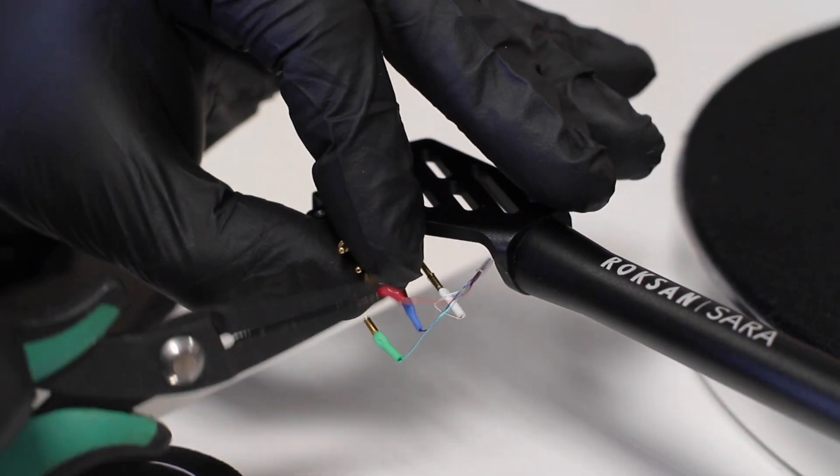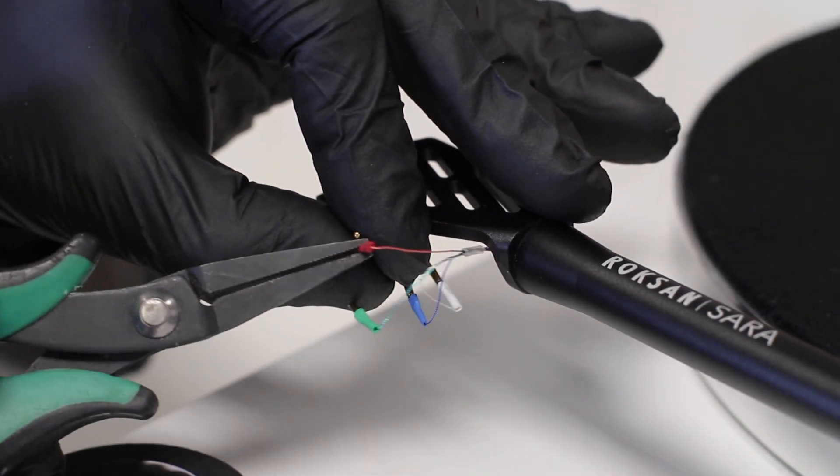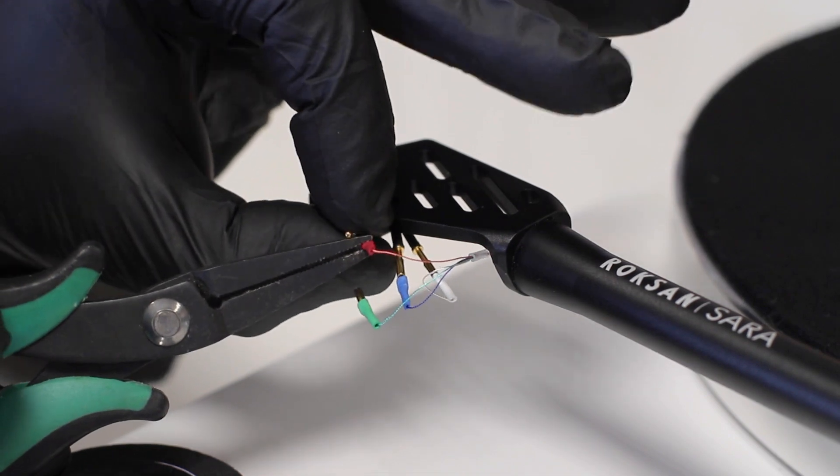With a pair of small pliers, connect the wires under the head shell to the cartridge pins, matching the colors.